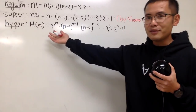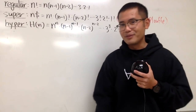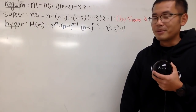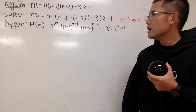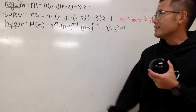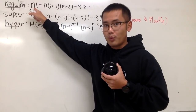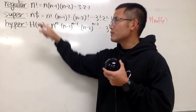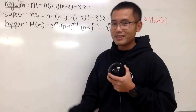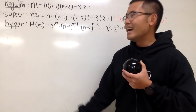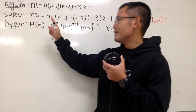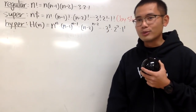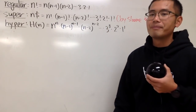Have you guys seen any of this? Let me know in the comments below. And the truth is: when you have 0 factorial, that's 1. When you have 0 super factorial, that's also 1. And when you have 0 hyperfactorial, that's also equal to 1. That's pretty cool.